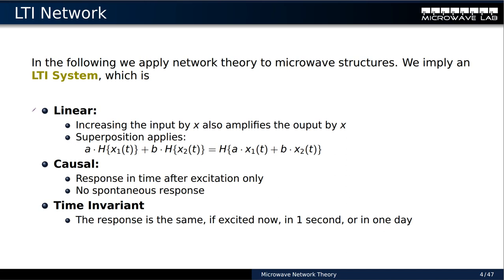There are basically three major points. First, our network must be linear — when I increase my input by factor X, I also increase my output by factor X. So when I double my input, this doubles the output, and superposition applies. We can take two signals, put them to the system and then multiply, or multiply first and then put them to the system, giving the same result. This is important for multiple-input multiple-output networks. Then our network has to be causal — it doesn't do anything spontaneous. We need an excitation to get a response; without excitation, no response.